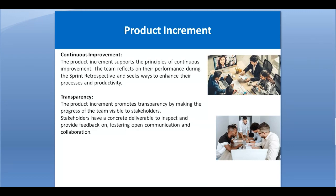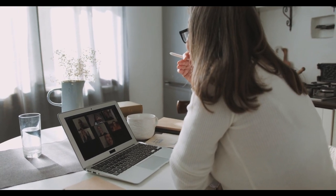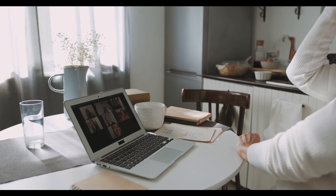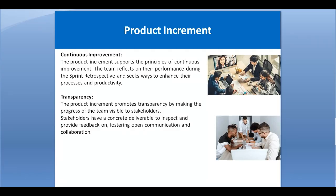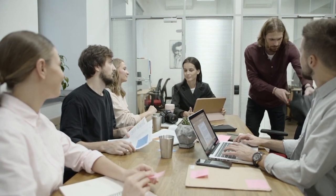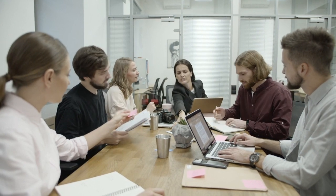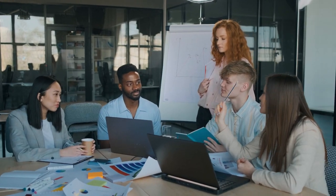Transparency — the product increment promotes transparency by making the team's progress visible to stakeholders. Whenever the sprint ends, a new functionality is added to the working software and reviewed with stakeholders, giving them visibility into the status of the project. Stakeholders have a concrete deliverable to inspect and provide feedback on, fostering open communication and collaboration. The feedback is more valuable because it concerns working software integrated with all third-party systems.